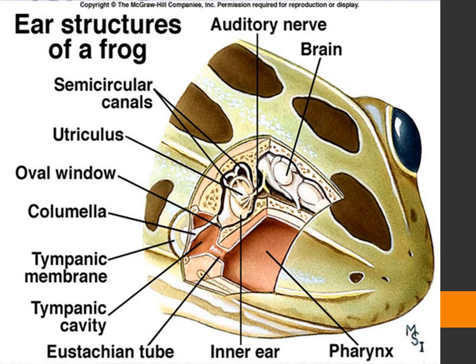In this final slide you can see the components of the ear: the tympanic membrane, tympanic cavity, columella or stapes, oval window, utriculus, and semicircular canals, which can detect rotational movements. These are the parts of the inner ear.